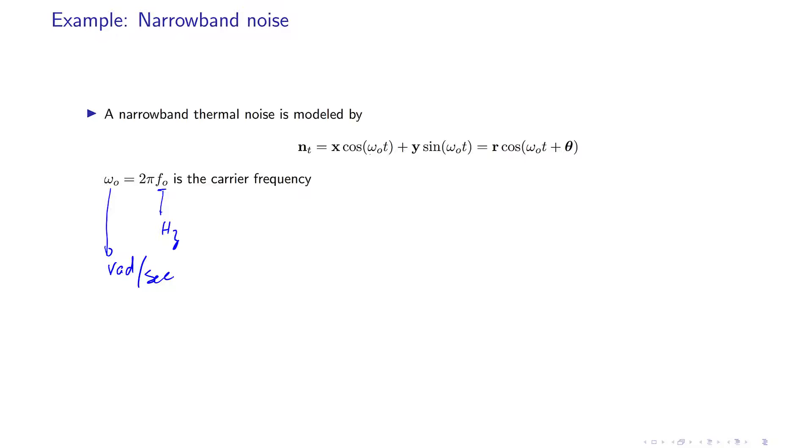You can consider this random pair x and y at one point. Let's say this is your x coordinate and this is your y coordinate. This is your r and this angle is theta.